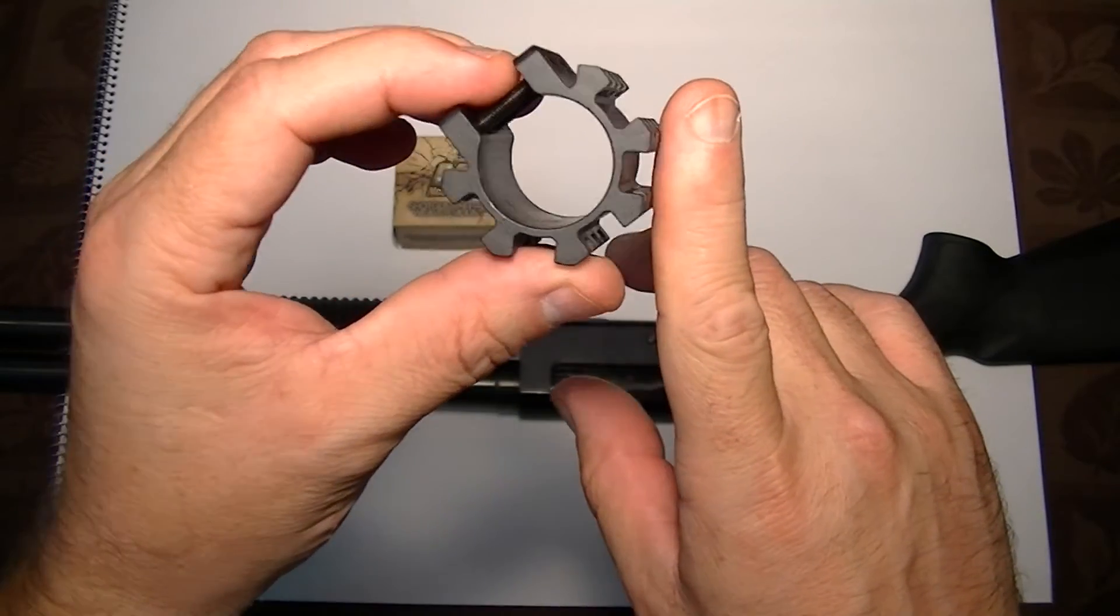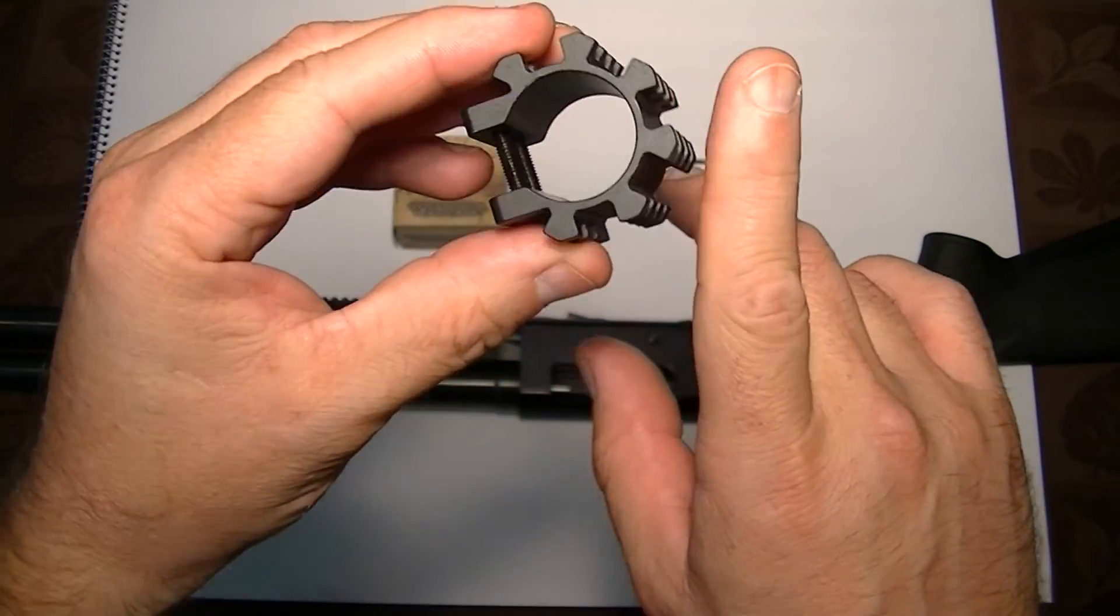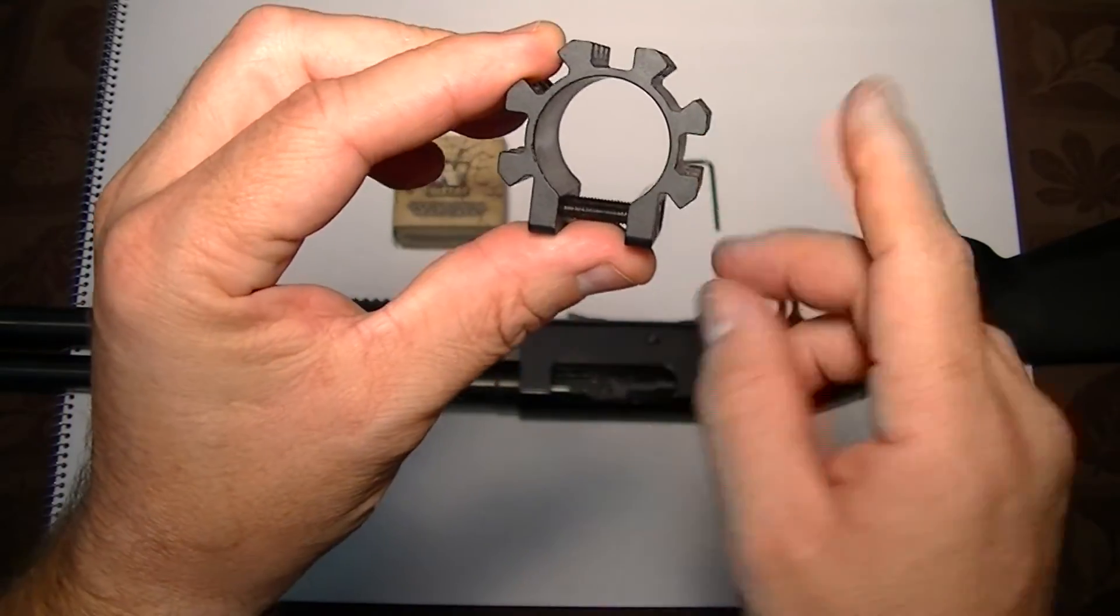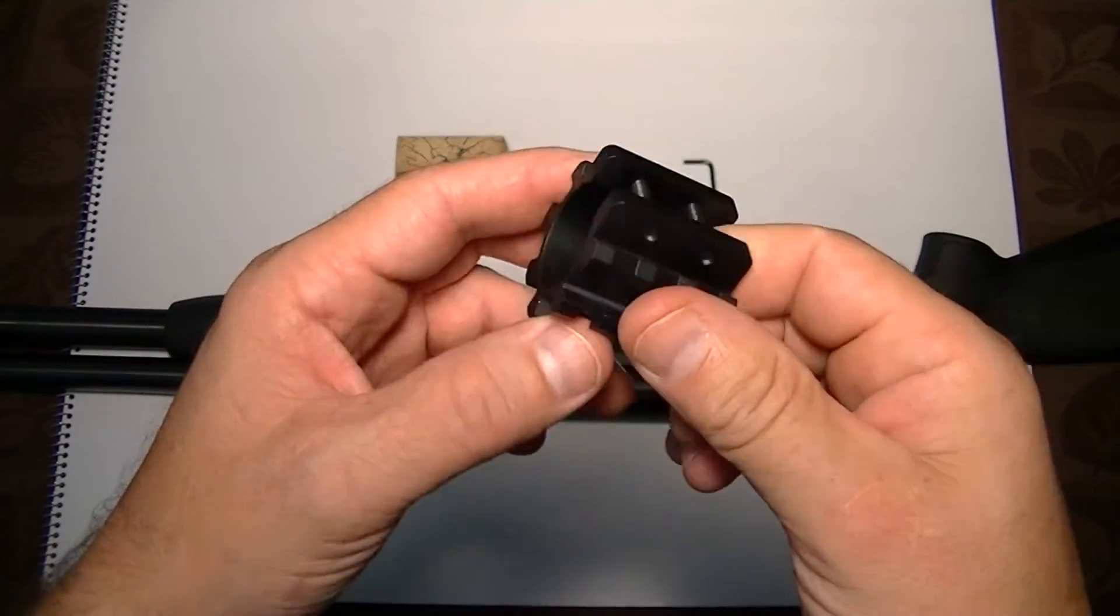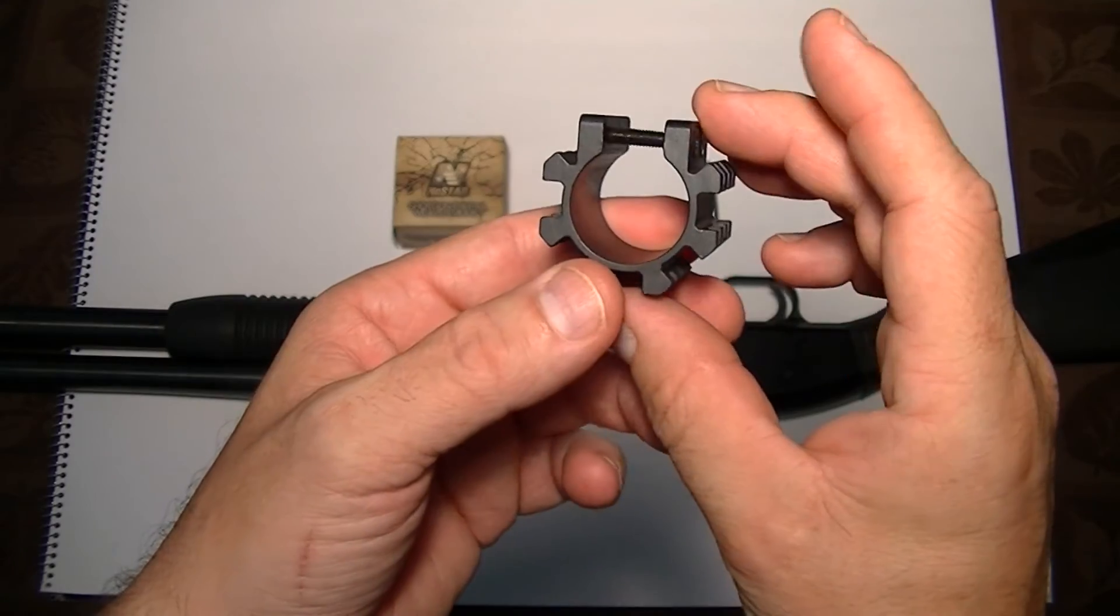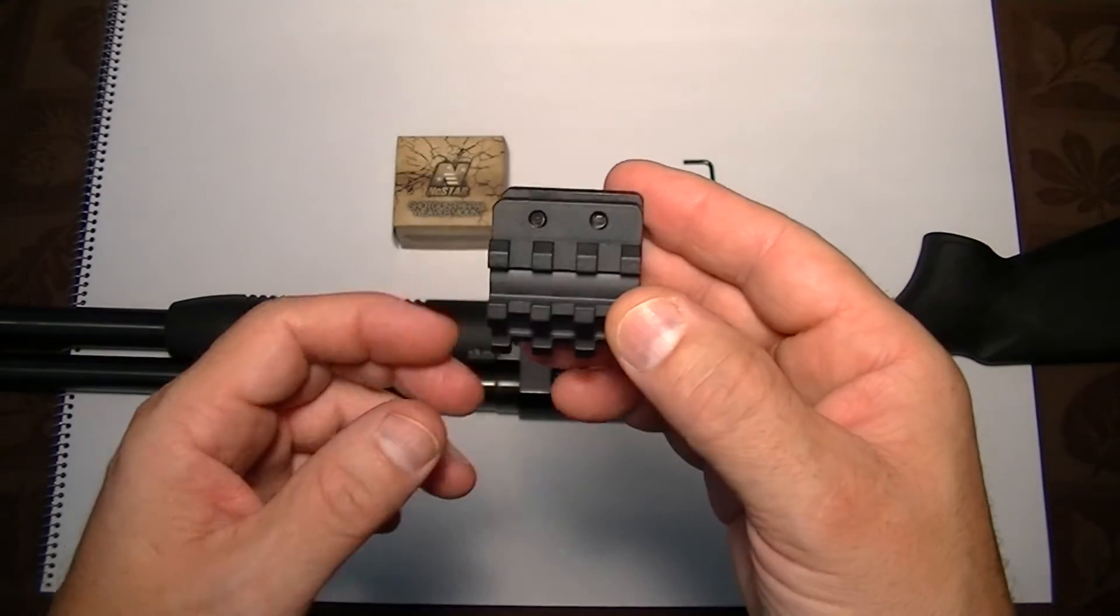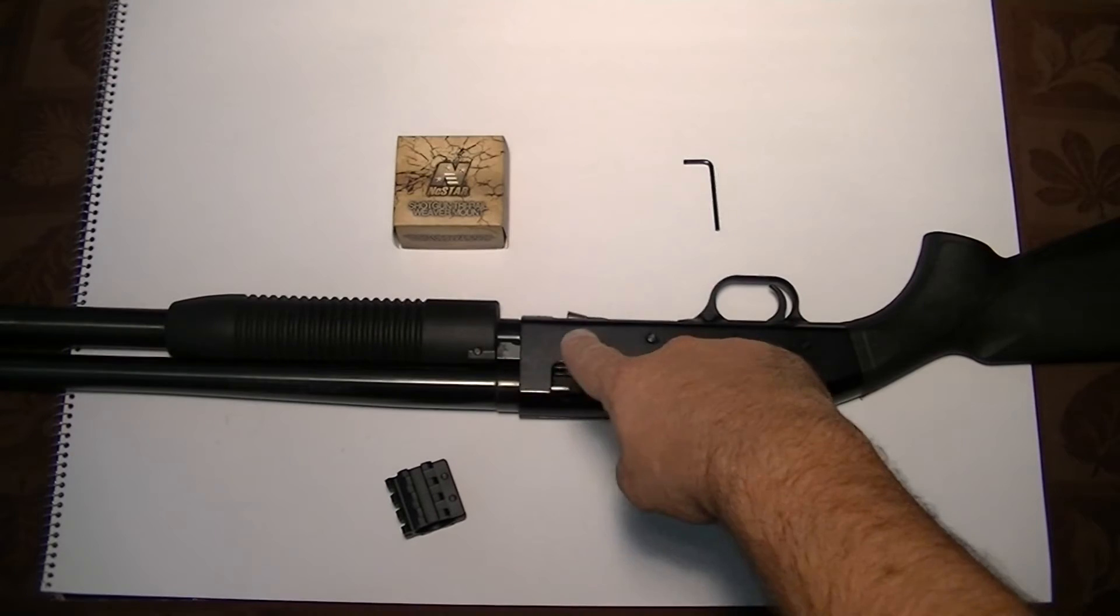They call it a tri-rail because there's one, two, three, but really there's one, two, three, four, and five possible angles that you can put an accessory on. Here we're just going to call it tri-rail and install it as such.